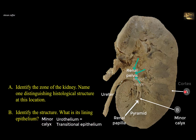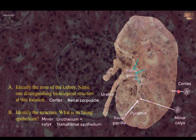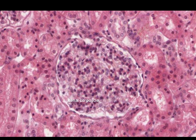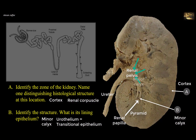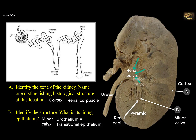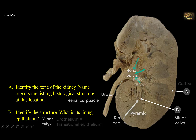The outer zone A is the cortex of the kidney, and it contains the renal corpuscles, which are responsible for filtration of the blood. Apart from the renal corpuscles, which are distinguishing histological features in this zone, there are also other parts of the nephron, like the proximal and distal convoluted tubules. Note that the loops of Henle and collecting ducts, which may be detected in the cortex and the renal columns, are the main feature of the pyramidal-shaped medulla.